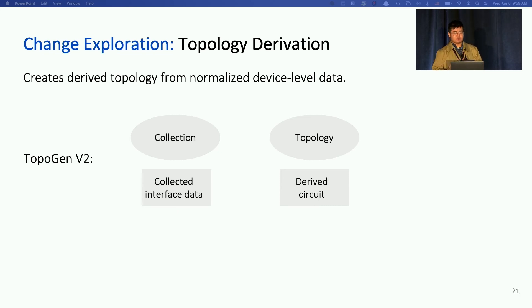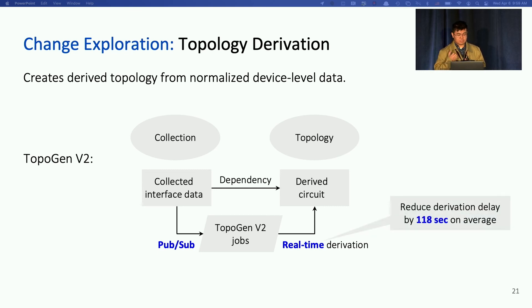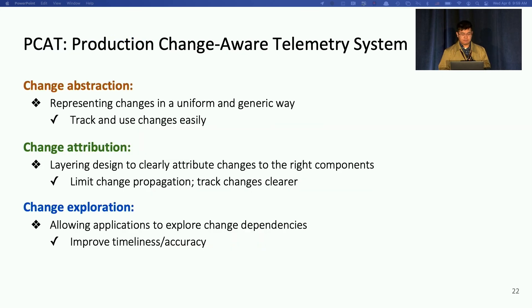Now, after introducing the ChangeCube, we identified the derivation dependency between the collected interface data and derived circuits. Then we built a PubSub system to enable real-time derivation. Basically, changes on the collect interface data will trigger TopoGen job running to derive circuits in real-time. This reduces the topology derivation delay by over 100-second average.